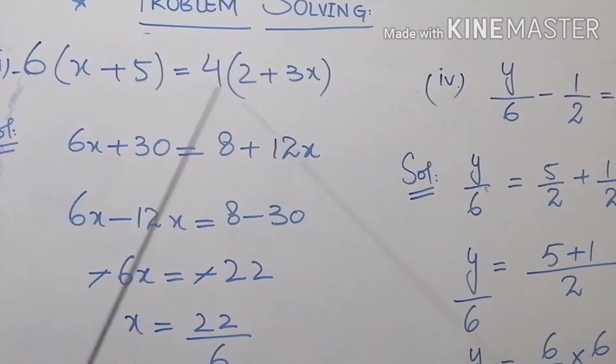4 twos are 8 plus, plus will be, sign will be as it is, 4 threes are 12, 12x. And now in the next step, I am going to collect the x values, the values which have variable at one side and the values without variable on the other side. So 6x and 12x are the values in this whole equation which have variable, but 8 and 30 are the values which have constants. Both these values don't have any variable.